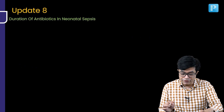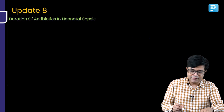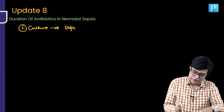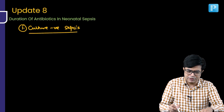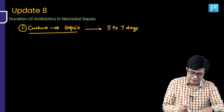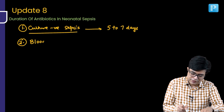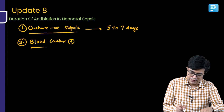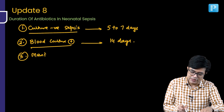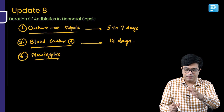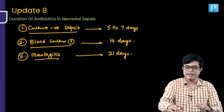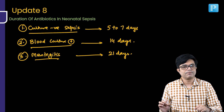Update number eight: what is the duration of antibiotics in neonatal sepsis? Three points. First, if it is culture-negative sepsis — screen was positive but culture was negative, or you started on clinical suspicion alone — antibiotics need to be given for five to seven days. Second, blood culture-positive sepsis without meningitis: give for 14 days (two weeks). Third, if the patient has meningitis, irrespective of culture status, give 21 days (three weeks) of IV antibiotics.